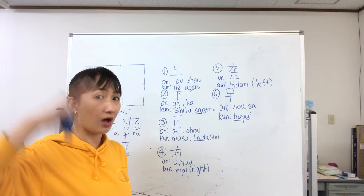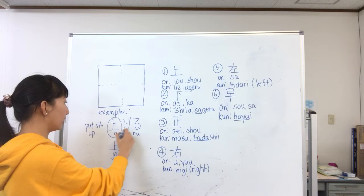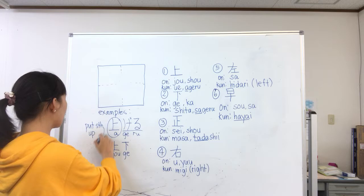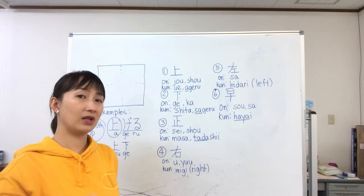The example I have for you is agiru — only the 'a' is written in this kanji, and then geru is in hiragana. Agiru means to put something up. For example, if you want your students to raise their hands: te wo agite kudasai — please raise your hands.